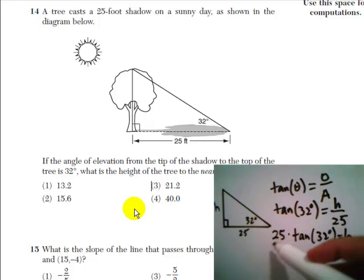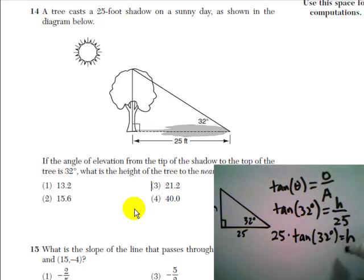Now all we need to do is plug this expression, 25 times the tangent of 32 degrees, into our calculator. Make sure your calculator is in degree mode for this, not radian mode, otherwise you'll get the incorrect answer. When we plug in and round to the nearest tenth, we see that the height of the tree is 15.6 feet, which is answer choice two.